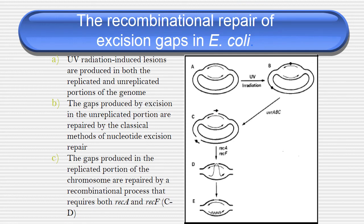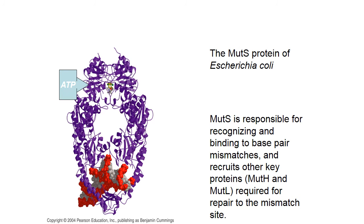The recombinational repair of excision gaps in E. coli: UV radiation-induced lesions are produced in both the replicated and unreplicated portions of the genome. Gaps produced by excision in the unreplicated portion are repaired by the classical method of nucleotide excision repair, and gaps produced in the replicated portion of the chromosome are repaired by a recombinational process requiring both REC-A and REC-F genes. MUT-S protein of E. coli recognizes and binds base pair mismatches and recruits other key proteins like MUT-H and MUT-L required for repairing the mismatch sites. ATP is the general energy source for this repair mechanism.